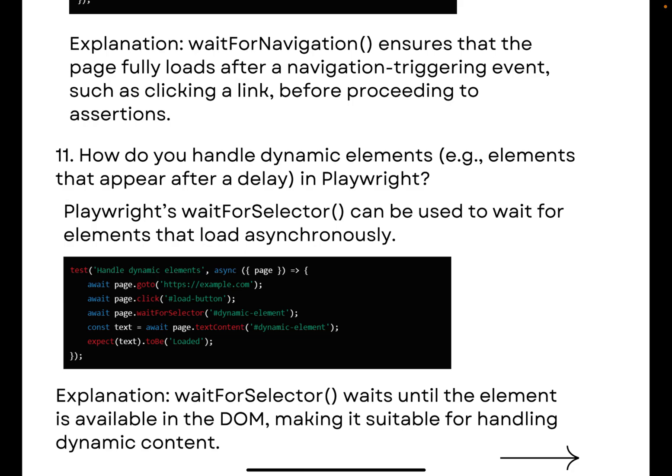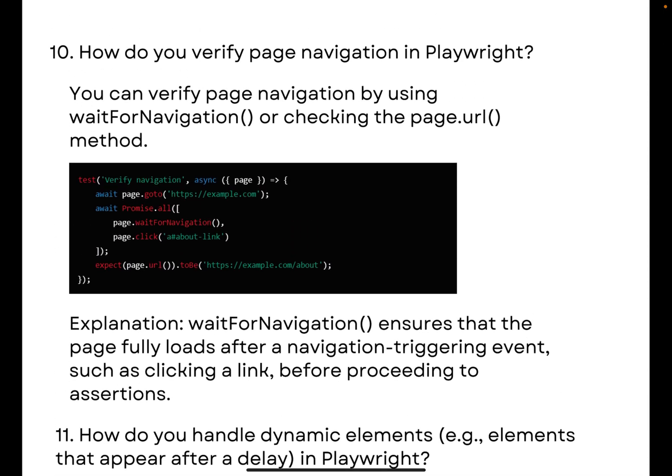The next question is: how do you handle dynamic elements in Playwright? To handle dynamic elements, use the `waitForSelector()` method, which helps elements load asynchronously. This method waits until the element is available in the DOM, making it suitable for handling dynamic content. As shown in the code, you provide the CSS selector inside `waitForSelector()` and it will wait until that locator appears in the DOM. Those are the questions covered in this video.